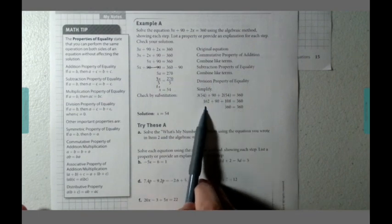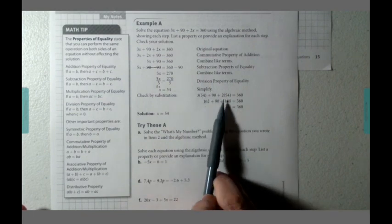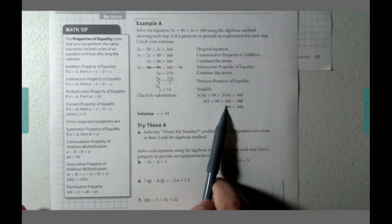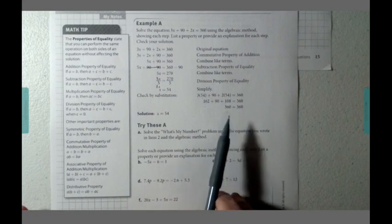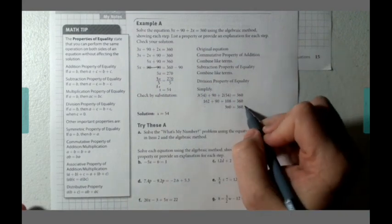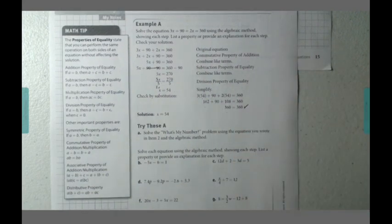Well, the 3 times 54 is 162. The 2 times 54 is 108. And 162 plus 90 plus 108 is 360. So, therefore, we got the same number on both sides of the equation. So this does work. Our solution is x equals 54.